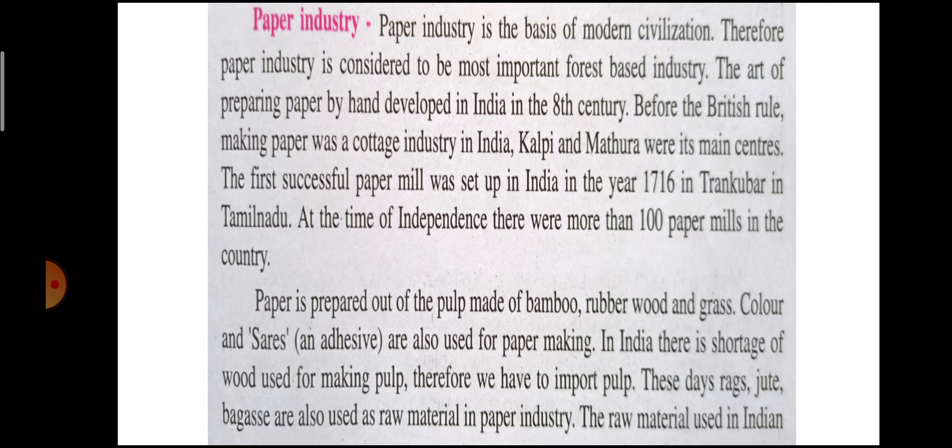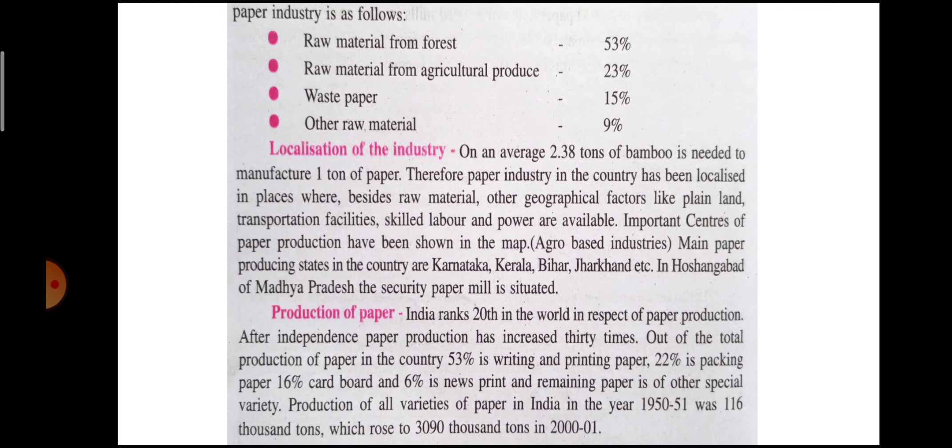The raw material used in paper industries comes from the forest. 53% raw material is from forest, 23% from agriculture produce, 15% is waste paper, and other raw material is 9%. Now let us look at the localization of the industry.